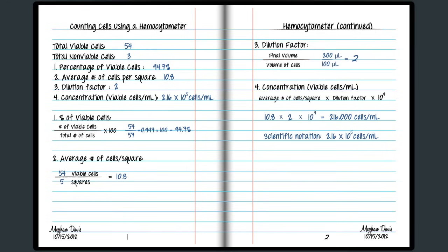From our calculations, we now know the concentration of cells in our culture is 216,000 cells per milliliter and approximately 94.7% are viable living cells.